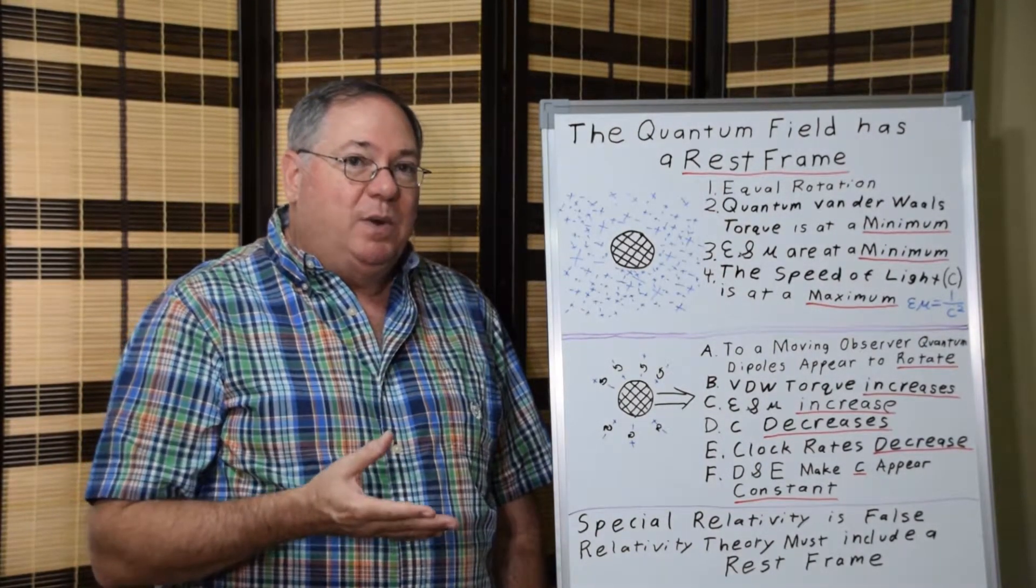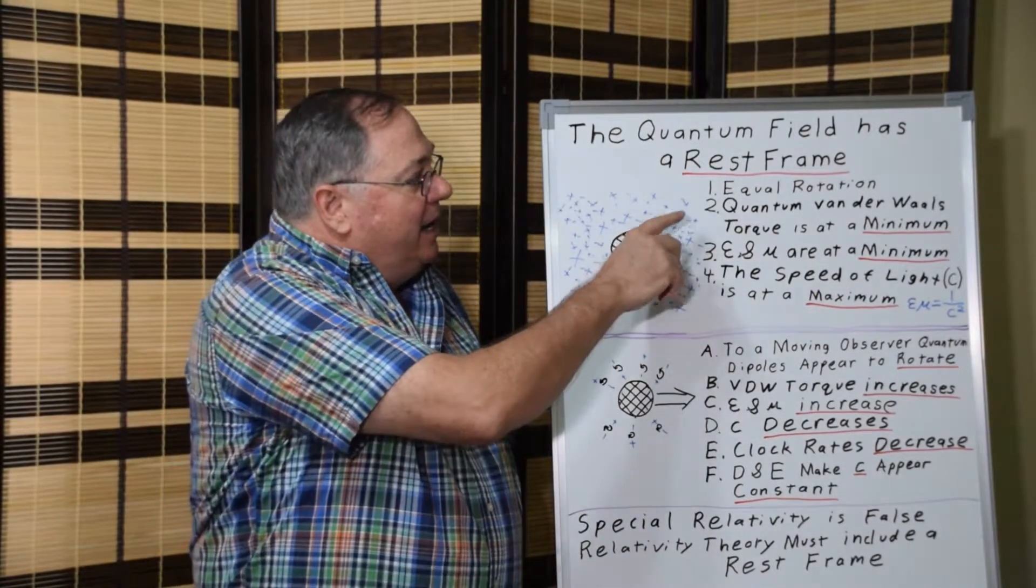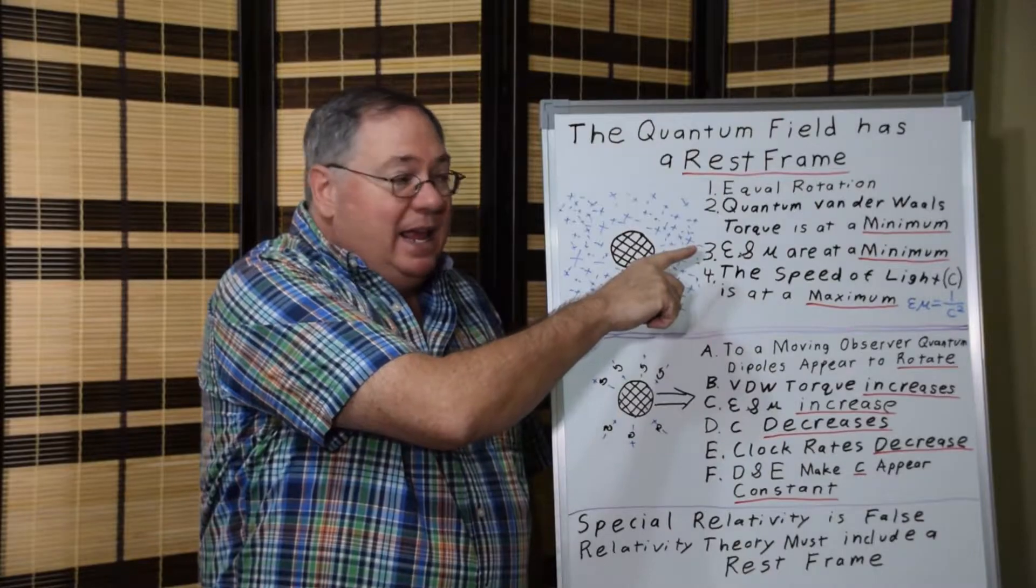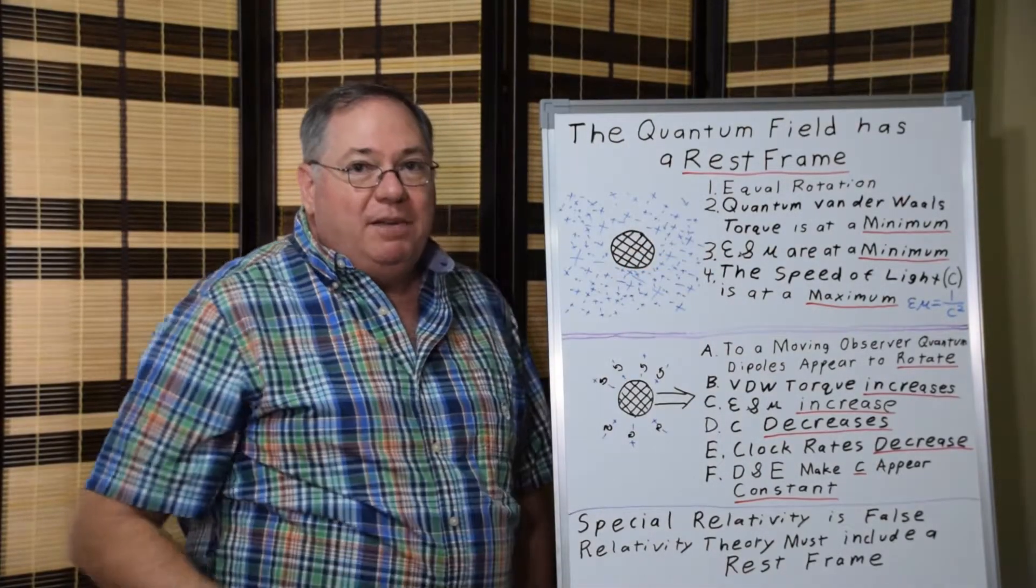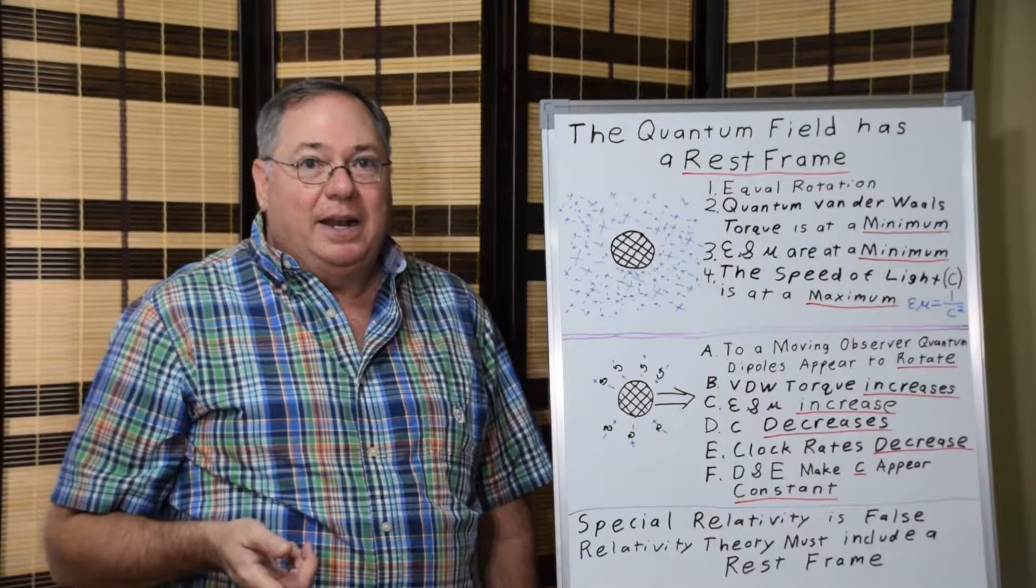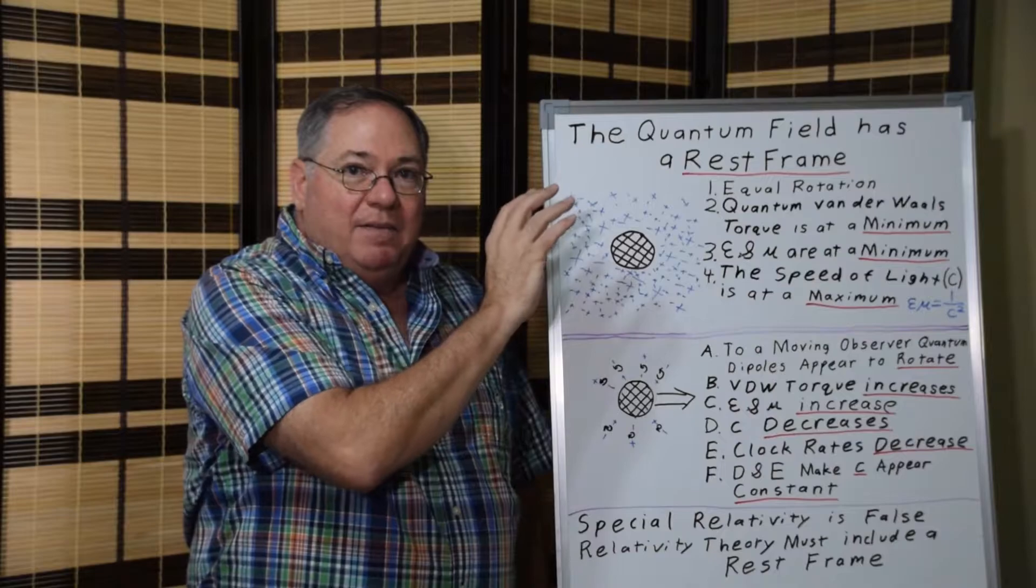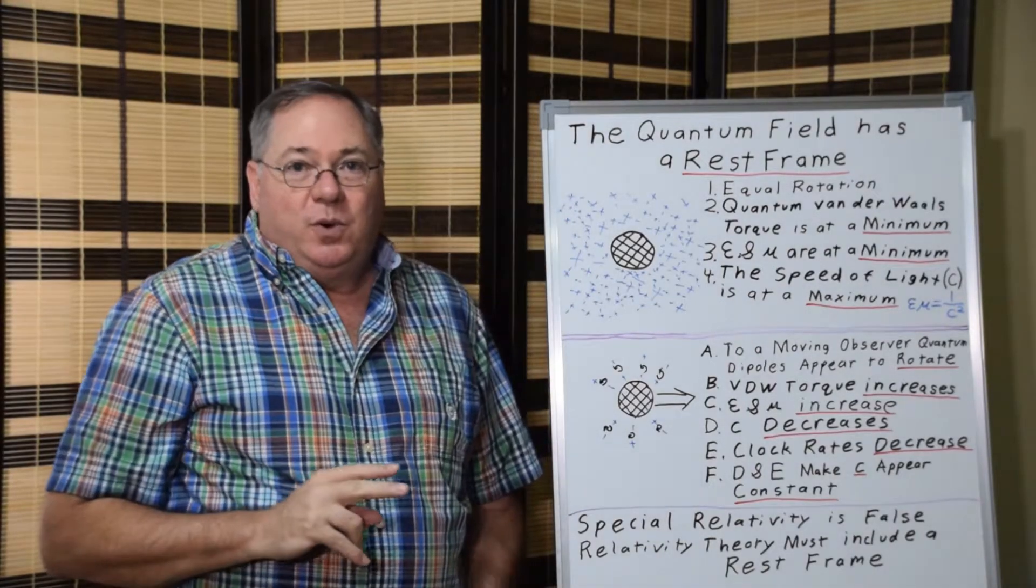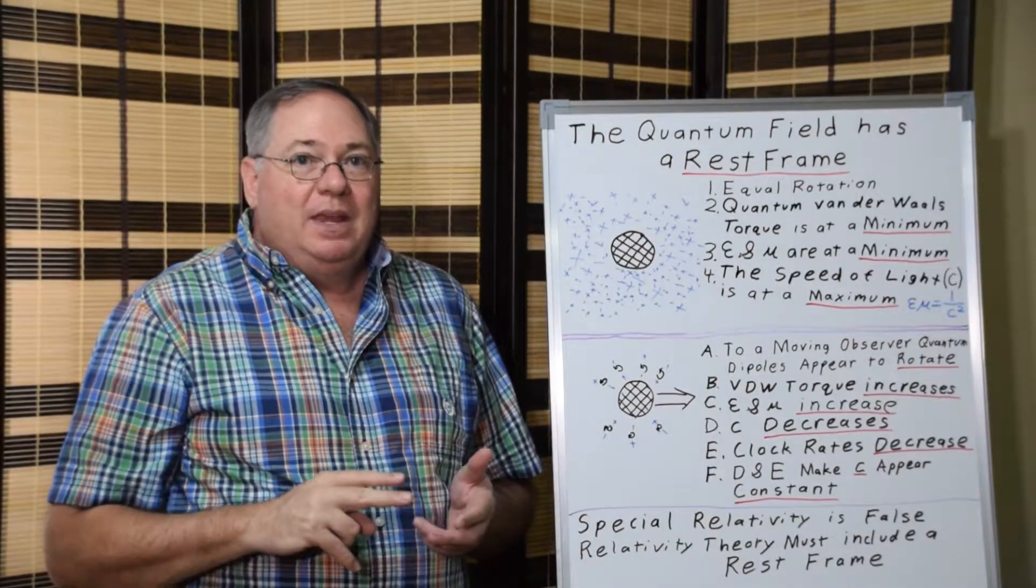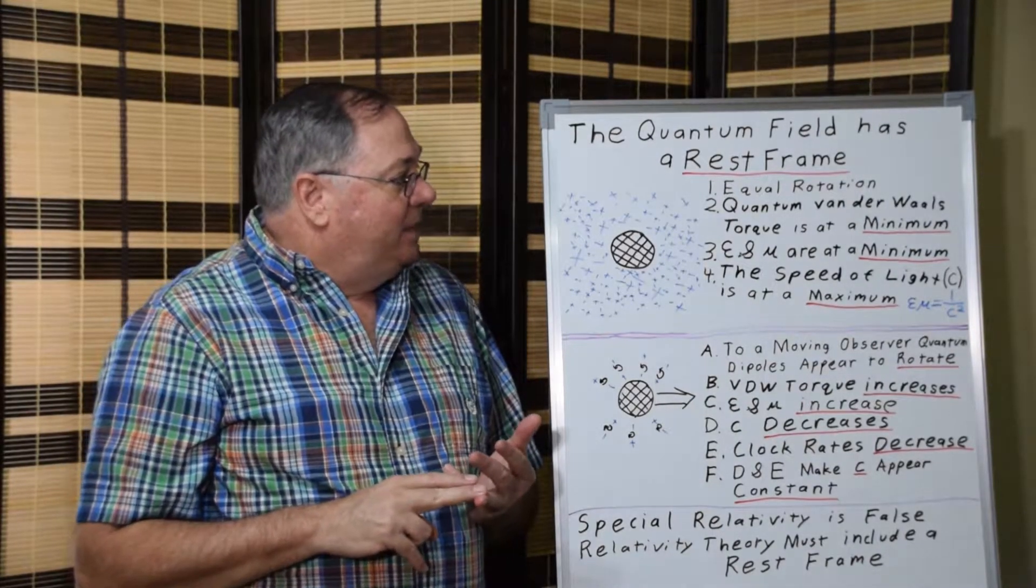The torque effect is what limits the electric and magnetic constant, which determines the speed of light. So in the rest frame we have a condition where the torque is at a minimum, the electric and magnetic constants are at a minimum, and the speed of light is at a maximum.